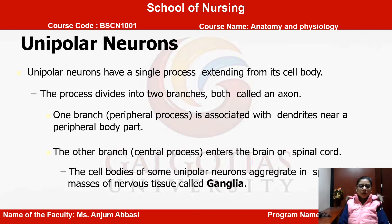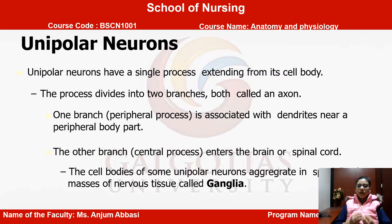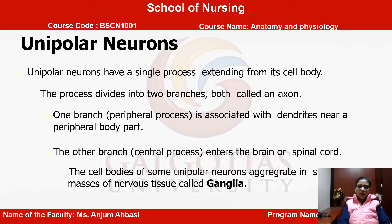The second type, according to classification on a structural basis, is known as unipolar neurons. Unipolar neurons have a single process extending from the cell body — meaning only a single projection. This further divides into many branches. One branch, the peripheral process, is called dendrites near a peripheral body part. The other, the central branch, enters the brain or spinal cord. The cell bodies of unipolar neurons aggregate in masses of nervous tissue called ganglia.